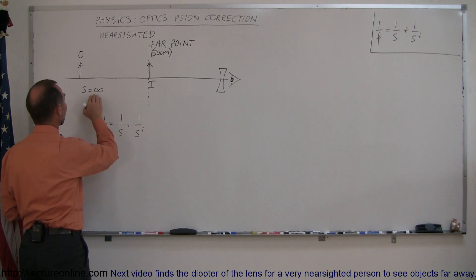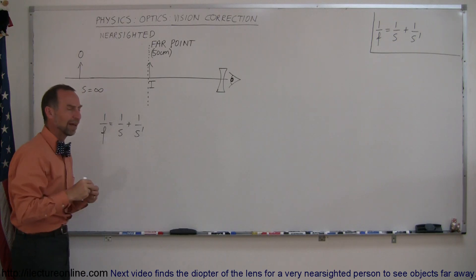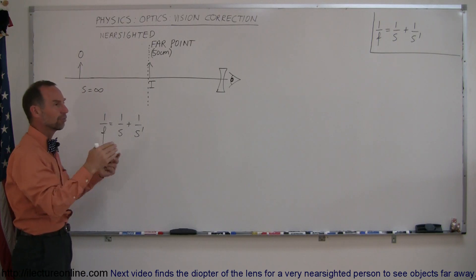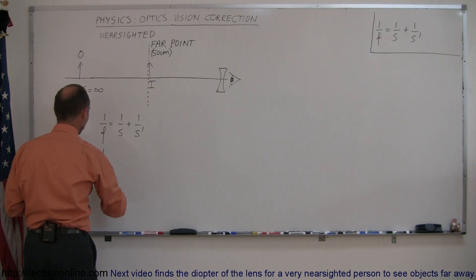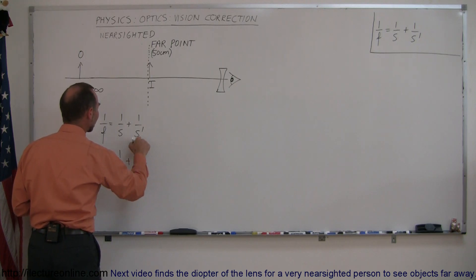Now let's plug in the numbers that we have. For s we're going to plug in infinity. Now we don't have to plug infinity; we can put in like a hundred feet or two hundred feet or a thousand feet, but infinity works a little bit better. So 1 over f equals 1 over infinity plus 1 over s prime.